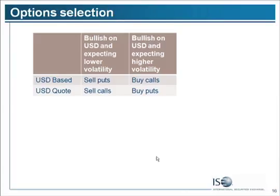So just a refresher on what I just talked about. Dollar-based: if you're bullish on the dollar but you don't think there's going to be much volatility, you might want to sell puts or put spreads. If you're bullish on the dollar and you think there will be more volatility, and it's dollar-based, you might want to buy calls. If it's a dollar quote, you might want to sell calls, or if you're bullish on the dollar and you think there's going to be more volatility, you buy puts.